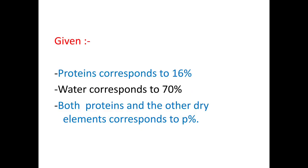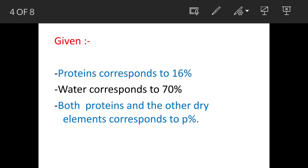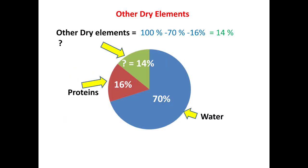Now we will go to the question now. The proteins are 16%, water is 70%, and both protein and other dry elements are P%. Now in this P% we know the value of proteins that is 16%. Now first we will find out other dry elements and thereafter we will find out the angle.